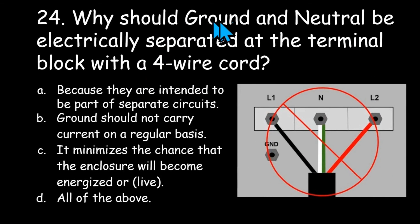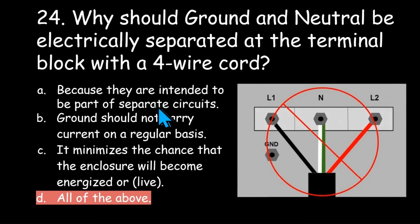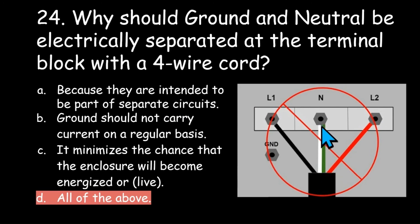Number 24: why should ground and neutral be electrically separated at the terminal block on a four-wire cord? They are intended to be part of separate circuits, ground should not carry current on a regular basis, it minimizes the chance that the enclosure will become energized or live, or all the above? The answer is all the above. Ground is intended to be its own conduction path — an emergency path for current back to the breaker box — and is not intended to carry current on a regular basis.